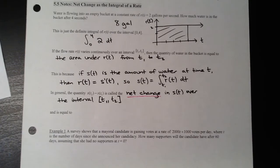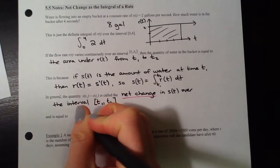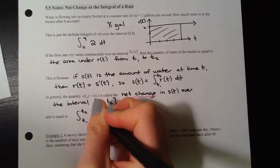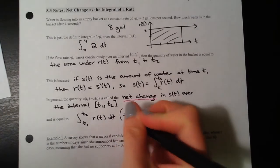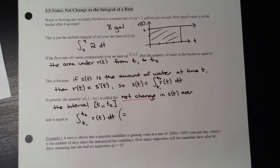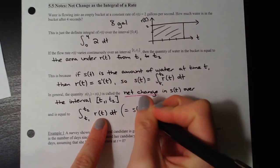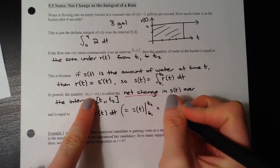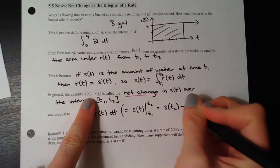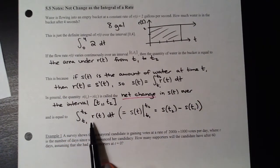Just to show you: the First Fundamental Theorem takes the antiderivative of r(t), which is s(t), evaluated from t1 to t2. We plug the upper bound into the antiderivative and then subtract the lower bound plugged in. So the definite integral quantity is in fact equal to s(t2) minus s(t1), and the First Fundamental Theorem connects them together.